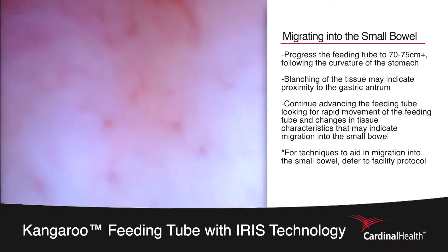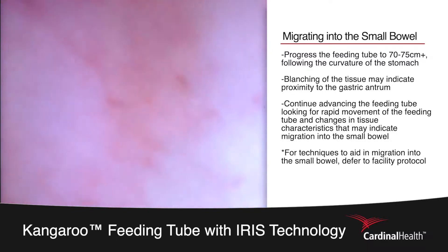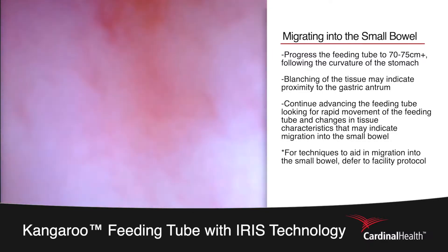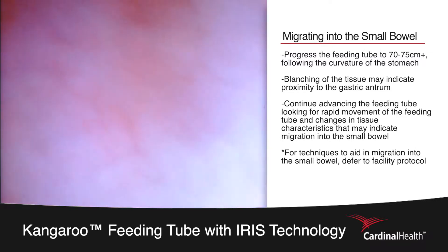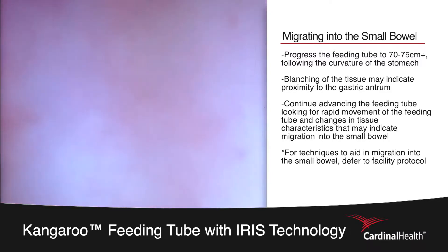For a desired post-pyloric placement, the placer may continue to progress the tube down to the 70-75 centimeter mark, where they may see rapid movement and changes in the tissue. As the tube progresses into the small bowel, due to the speed of placement, the pylorus may not be visualized.